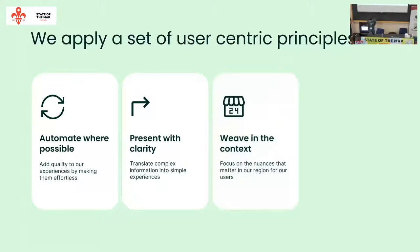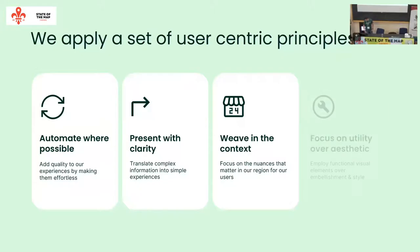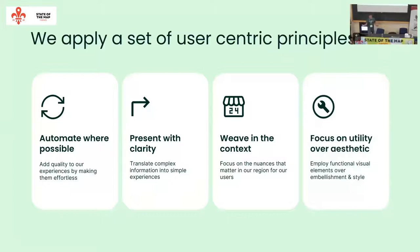The third principle is weave in the context — focus on the nuances that matter in our region for our users. In Southeast Asia, everybody is using Android phones with 4.3-inch displays. Do you want to design something where the padding size is big but the Indonesian content is very long and you can't even see it? Or older drivers glancing at the phone with small text? We need to understand local people — how they feel, how they use devices. Focus on utility over aesthetics: short content, bigger tap spacing, clarity of font, readability. Do not design beautiful curly fonts that drivers can't read.